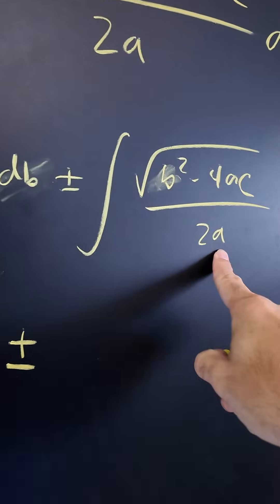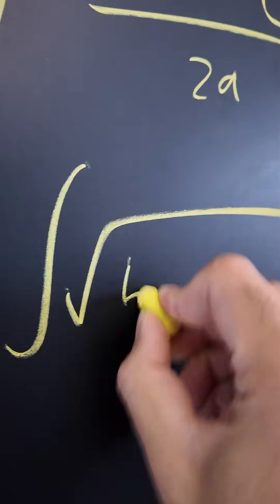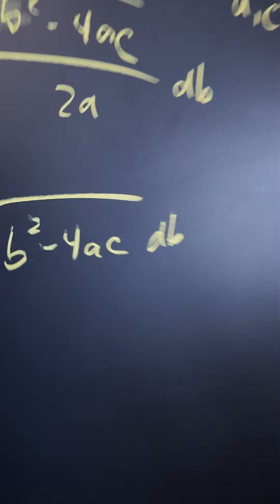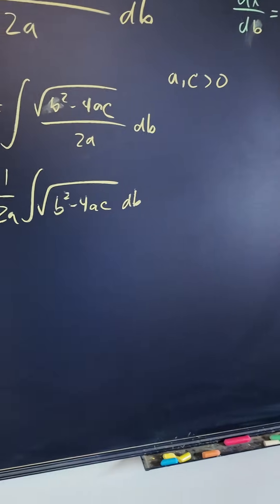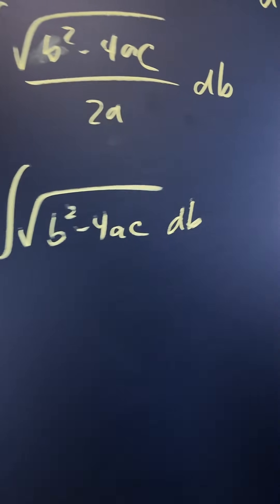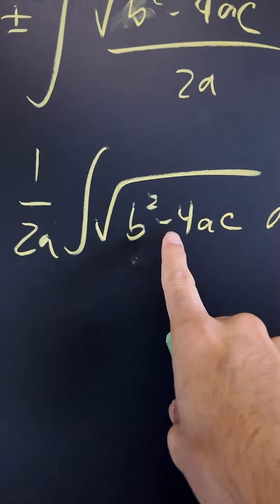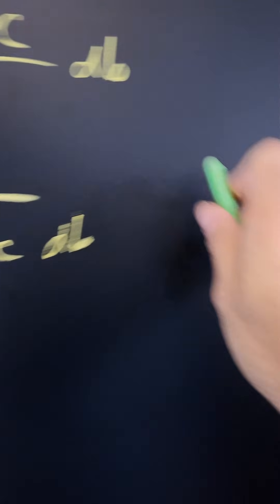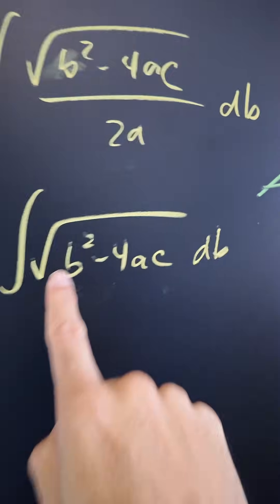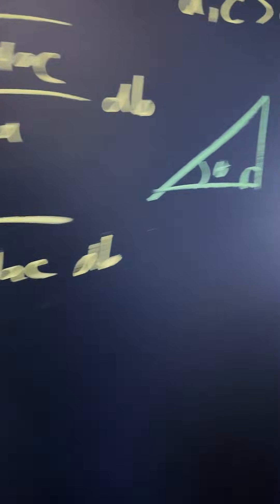Let's bring the 2a to the outside since it's a constant. So we're really trying to integrate root B squared minus 4ac with respect to B. We're going to use trigonometric substitution because we have the variable squared minus a constant squared. Since we have the variable squared minus the constant squared, we want to use secant.